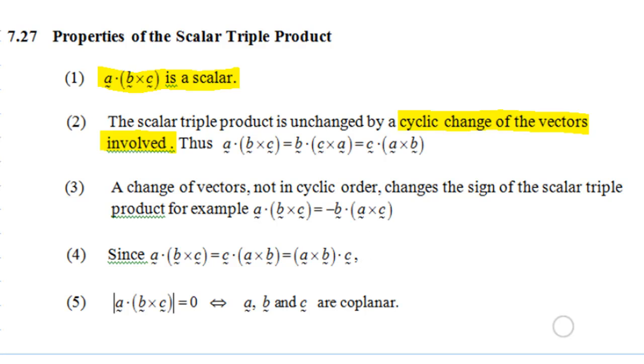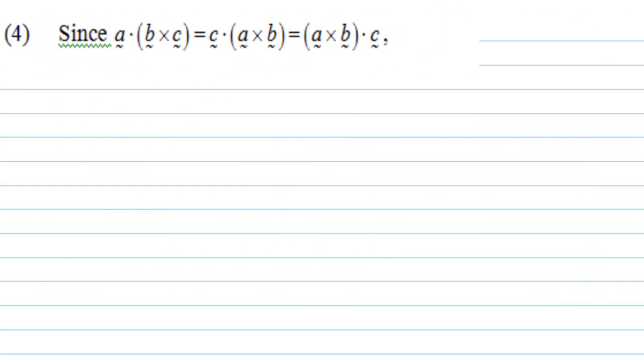Now let's look at point number four. Point number four say that A dot B cross C is equal to A cross B dot C. That means dot and cross can be interchanged. As you can see from here, A dot B cross C. You change the dot to cross, cross to dot you get A cross B dot C.